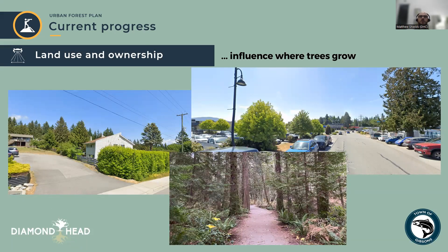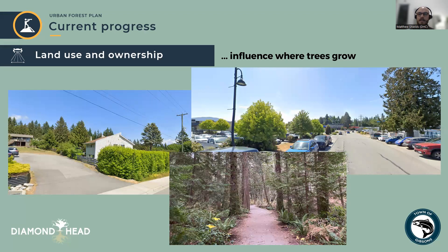Land use and ownership are another important facet informing our work on the urban forest plan. The plan will recognize how policies and property ownership determine where the urban forest grows and how. Trees depend on us saving space in urban areas so they can continue to thrive. While not everywhere can be a natural forest, Gibsons could have greener streets or yards if the community desires it, as long as the right policies are in place. Achieving higher canopy cover means looking at land use and zoning policies to see if they can better support trees.